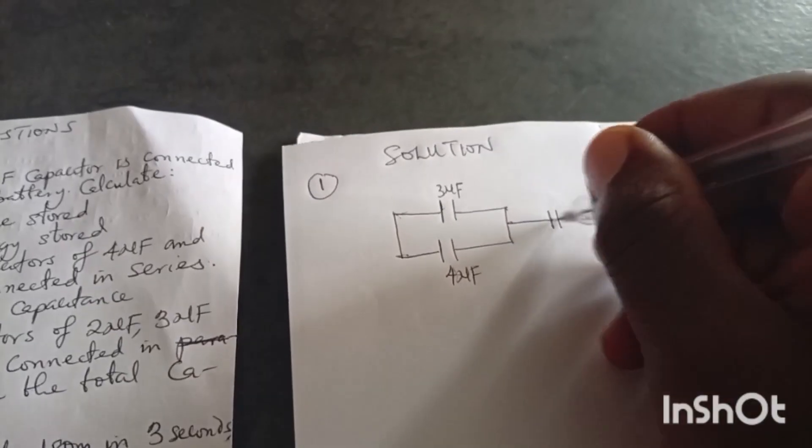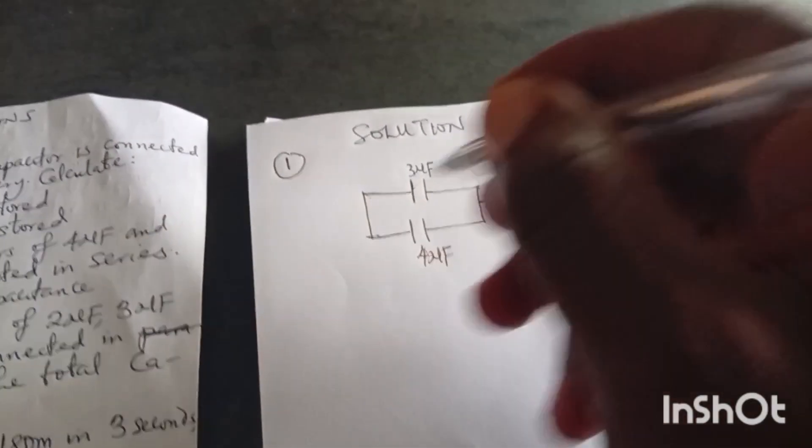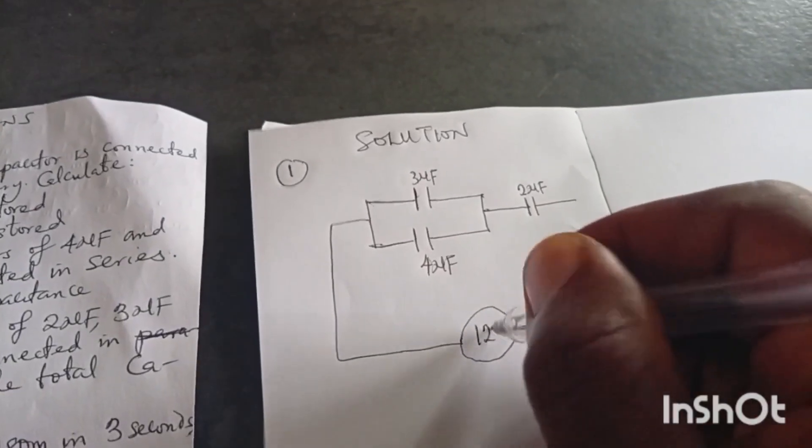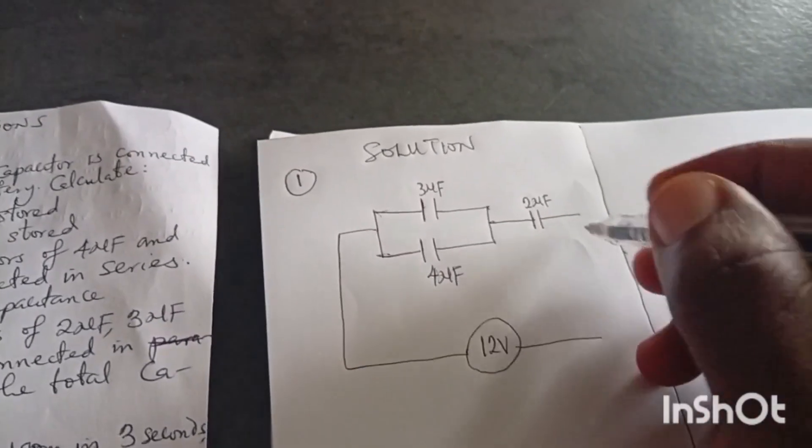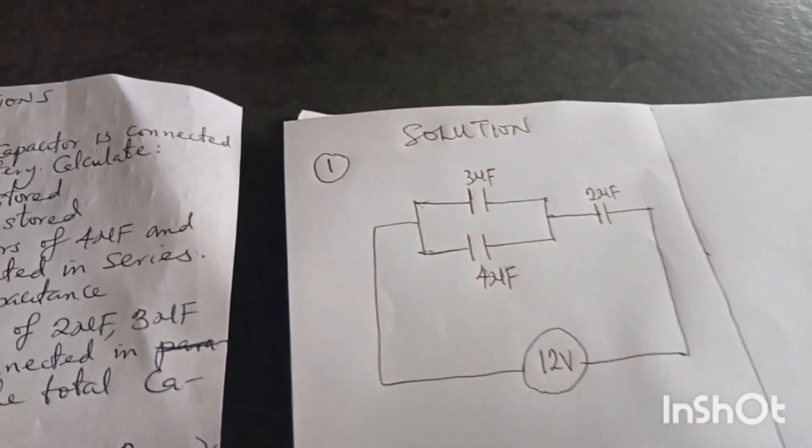This is the circuit for the two of them. And now they are connected to a 2 microfarad in series. That one is here. And all together, all of them are connected to the source that is 12 volts. I think that's the first question. They asked us to draw the circuit. With this simple circuit, you are good and you have got your answer.